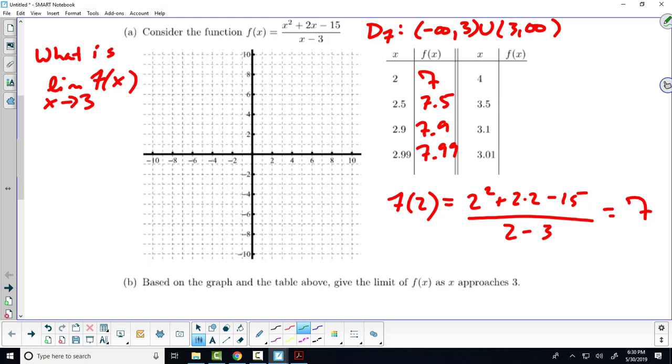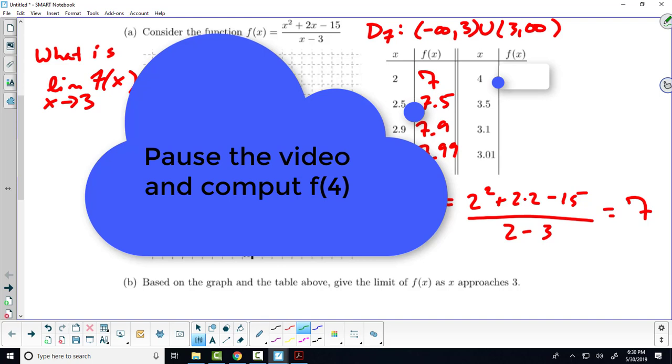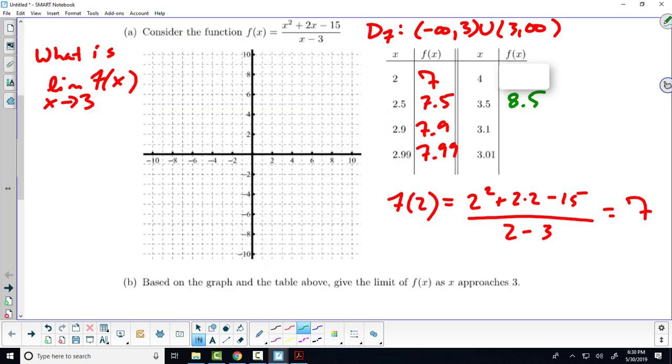As we plug in, if we plug in the domain value 4, we get 4 squared plus 2 times 4 minus 15 all over 4 minus 3. If we plug in 3.5, we'll get 8.5. If we plug in 3.1, we'll get 8.1. And if we plug in 3.01, we'll get 8.01.